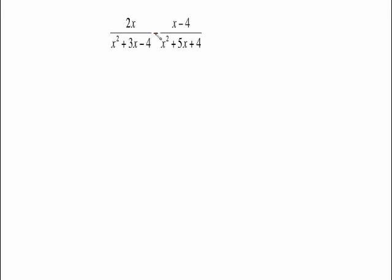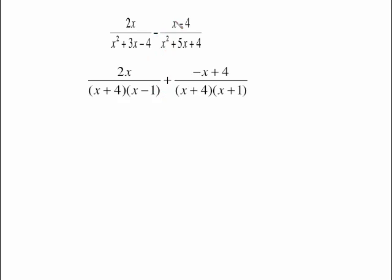This next problem has a minus sign in front that must be distributed through the numerator — change the signs accordingly. On the same step, factor the denominators: both are plain old trial and error trinomials. After distributing and factoring, we have the new form of the numerators and the factored denominators ready to work with.